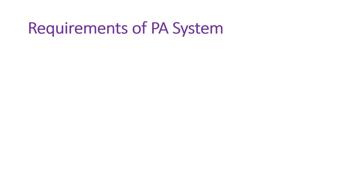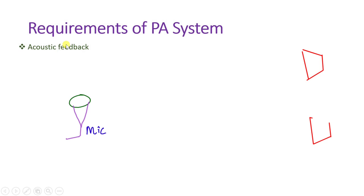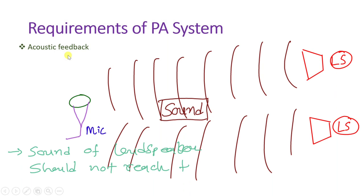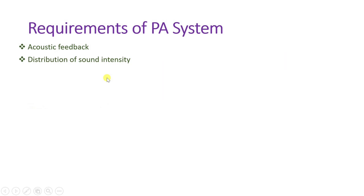Now we look at the basic requirements of a PA system. The first is acoustic feedback: there should be no feedback of the loudspeaker sound back to the microphone. The microphone must be isolated from the sound of the loudspeaker — acoustic feedback must be avoided.